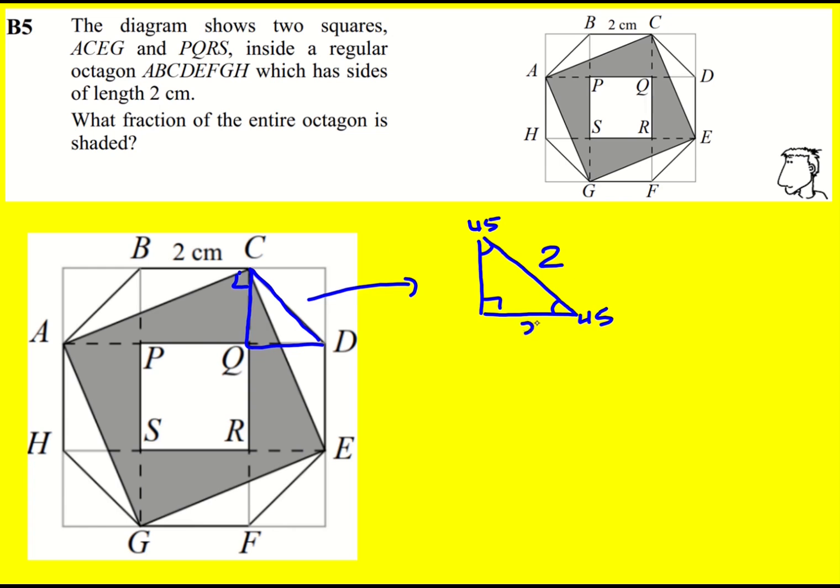Now I can work out what these two are. They're going to be the same. And x squared plus x squared, or 2x squared, is going to equal 4, 2 squared. I'm just using Pythagoras' theorem. x squared plus x squared is 2 squared. Therefore x squared will equal 2 and x will equal root 2.